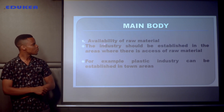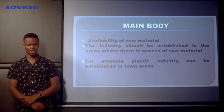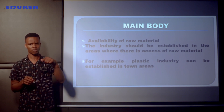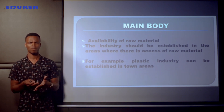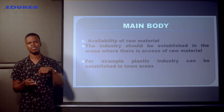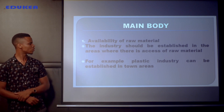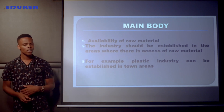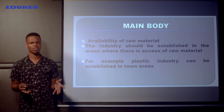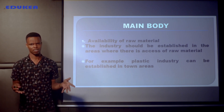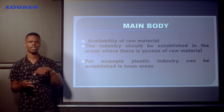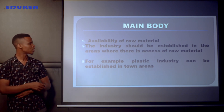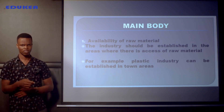The first point is availability of raw materials. For any manufacturing industry, raw material is the main thing because it is what is going to be processed. For example, a plastic industry can be established in town areas because in town areas these raw materials are obtained easily. A person can do recycling of plastic and send it to the industry for processing. Therefore, availability of raw material is very important for the establishment of an industry.